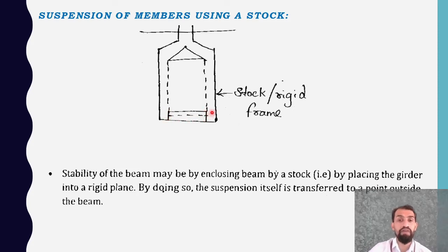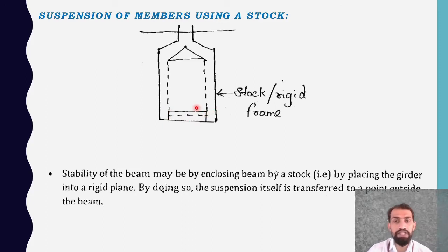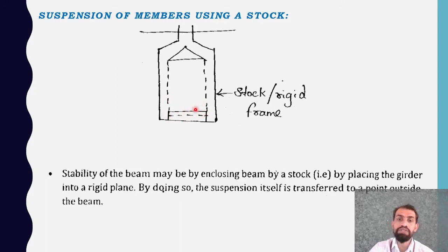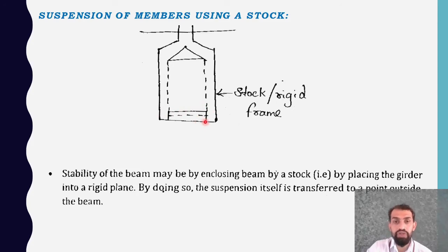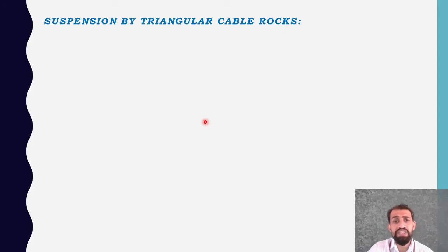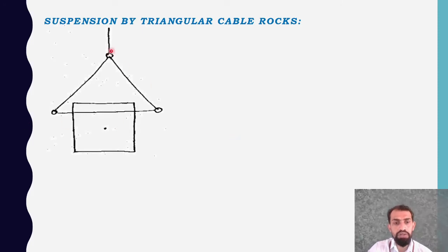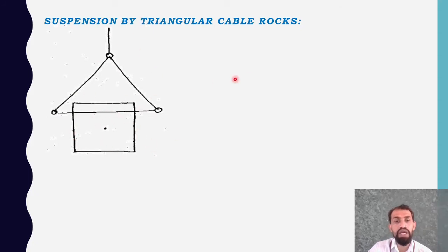Using the stock frame, the member becomes simply supported at the edges with more stability for carrying loads. This is similar to picking a small element by holding it at its edges — there is no rotational moment and no instability. The third type is suspension by triangular cable rocks, where cables are provided in a triangular shape, embedded into the beam and lifted from above.